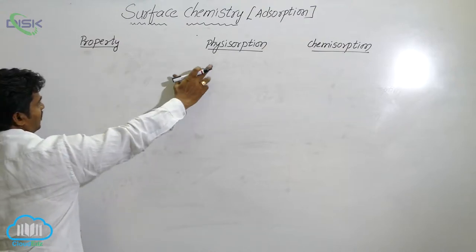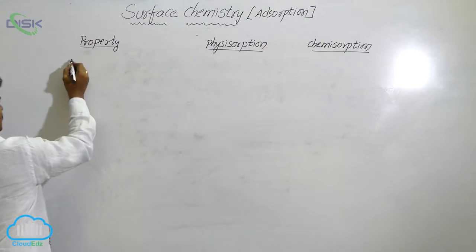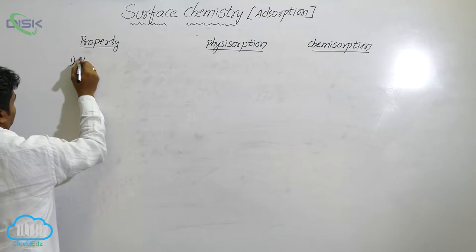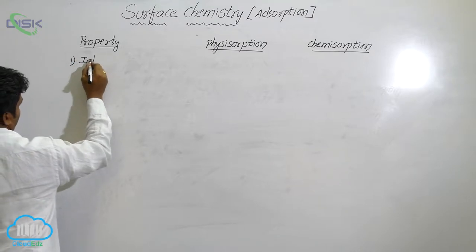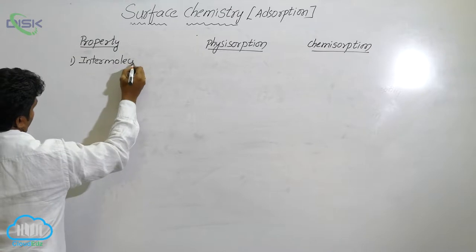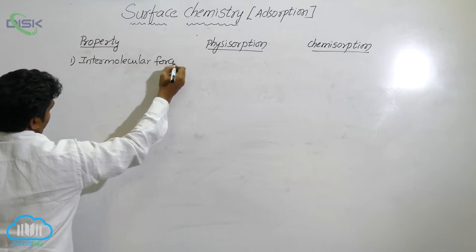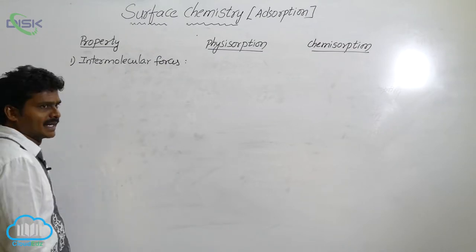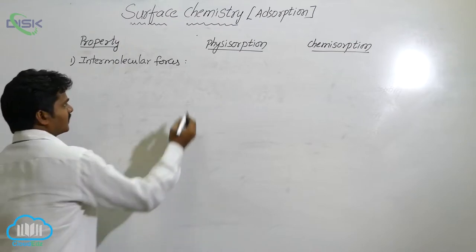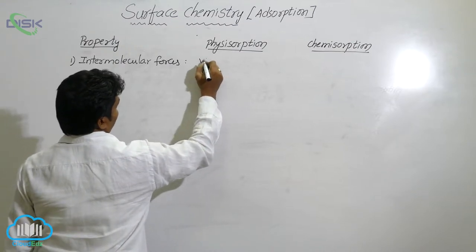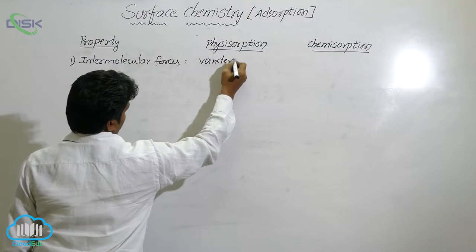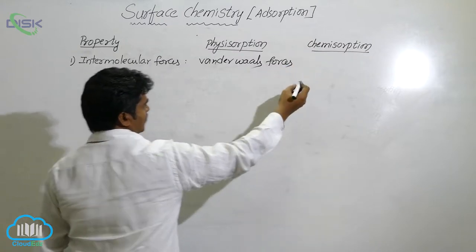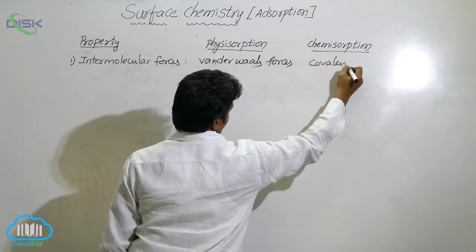Let's see the properties that differentiate physical and chemical adsorption. The first property is the intermolecular forces involved in adsorption. In physisorption, the intermolecular forces between adsorbate and adsorbent are van der Waals forces. But in chemisorption, covalent bonds are involved.